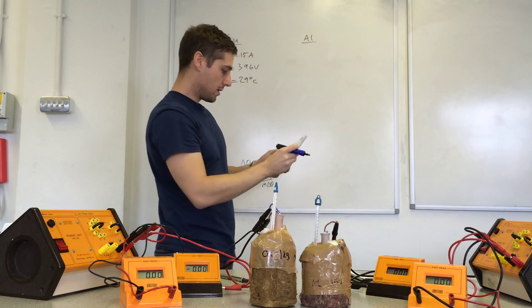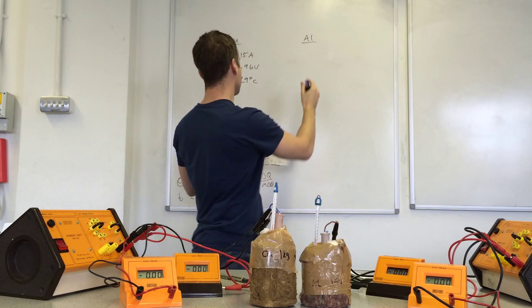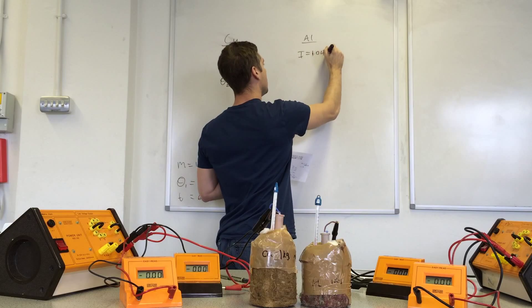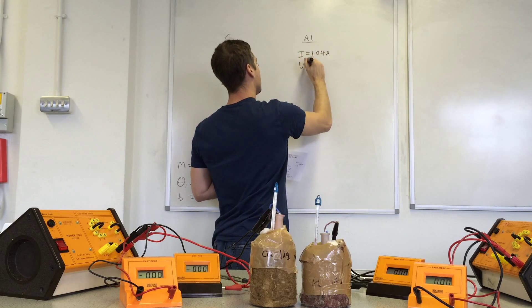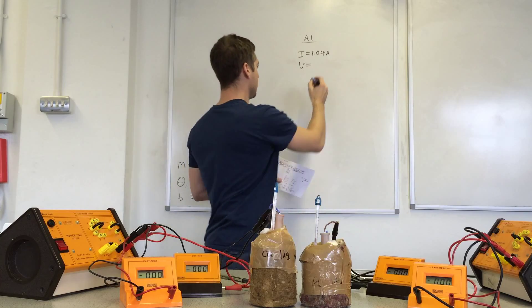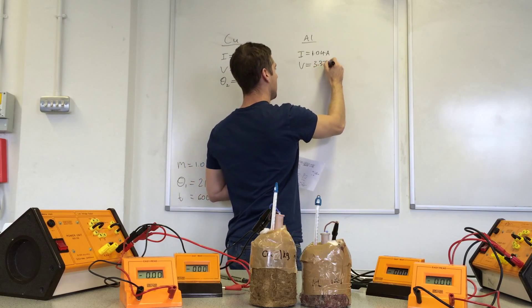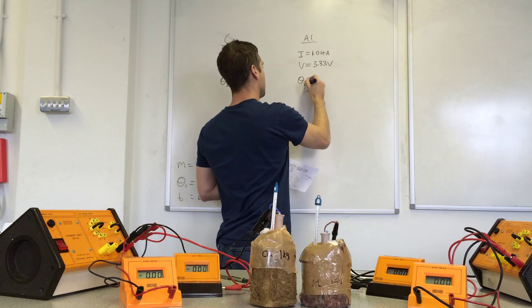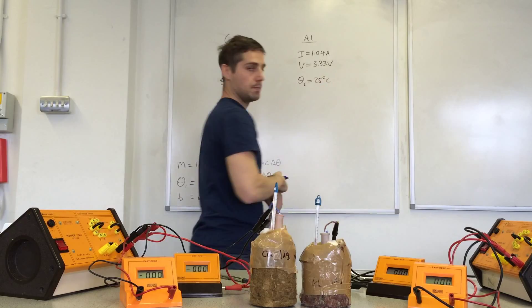For the aluminum block, I judge the average current to be 1.04 amps and the voltage to be 3.33 volts and theta 2, 25 degrees C.